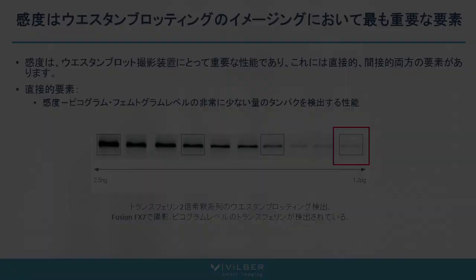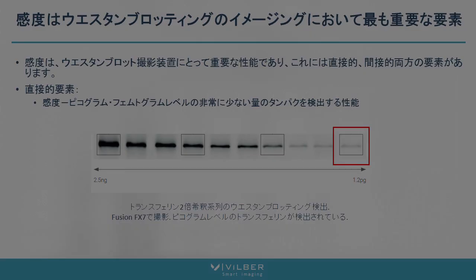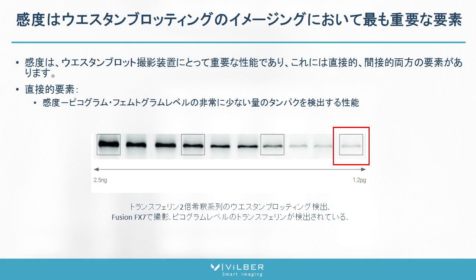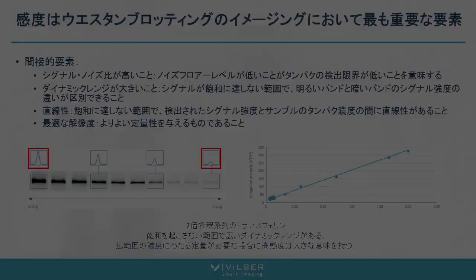You need sensitivity in order to identify proteins and to quantify them. Sensitivity is the key in regards to Western blot, because one of the big advantages of chemiluminescence Western blot is that we are able to detect a very small quantity of proteins — picogram levels and even femtogram levels. With chemiluminescence Western blot, we can detect such a small quantity of proteins. But sensitivity in Western blot imaging is about having on your image what you have on your blot.